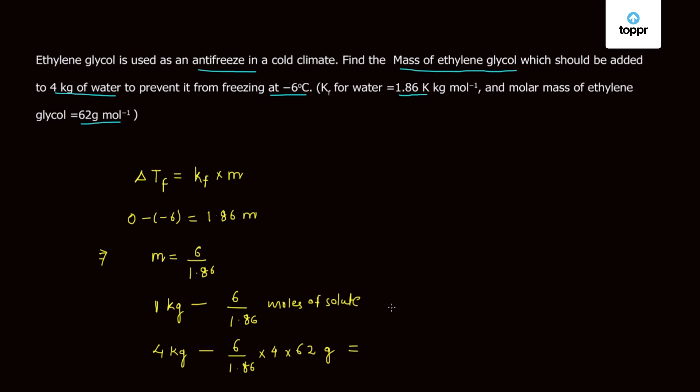This equals 804.32 grams. This much grams of ethylene glycol should be added to water to prevent it from freezing at minus 6 degrees Celsius.